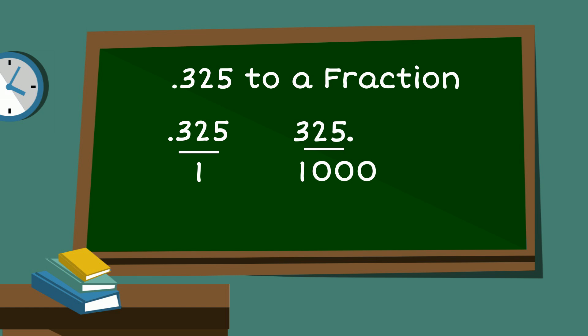We now can reduce the fraction. 325 is divisible by 25 and so is 1000. So 325 divided by 25 is 13.